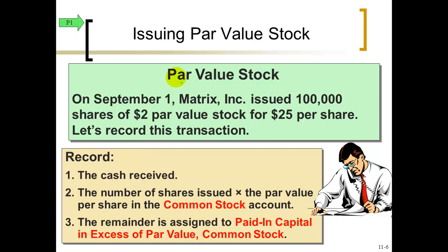Here we have stock with a par value of $2 per share. We're going to sell or issue 100,000 shares. You want to sell it for more than $2 — in this case we sold it for $25 a share. But what goes into the common stock account is the number of shares sold, 100,000, times $2, so $200,000. The extra money received — $23 times 100,000 — goes into a new account called paid-in capital in excess of the $2 par value for common stock.